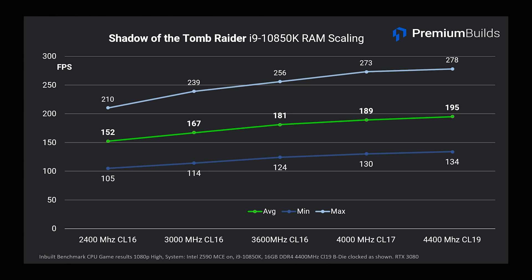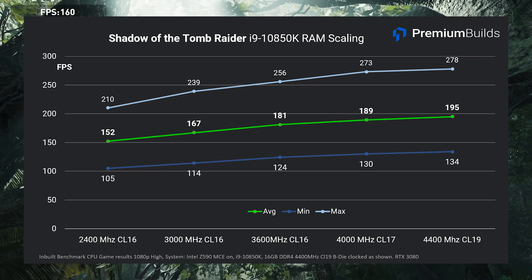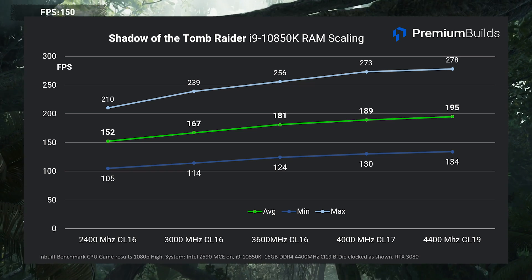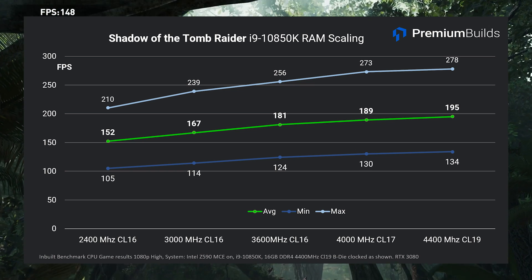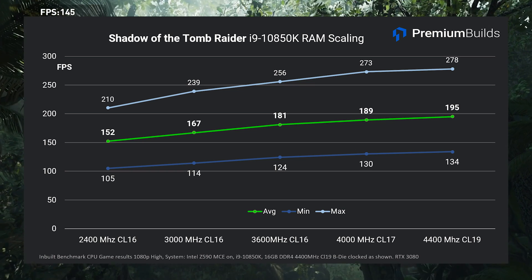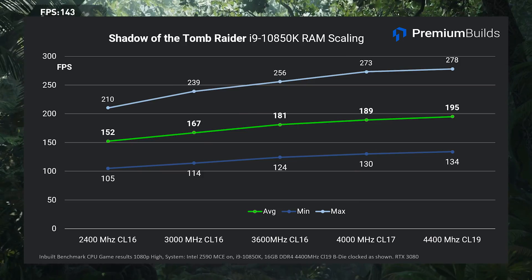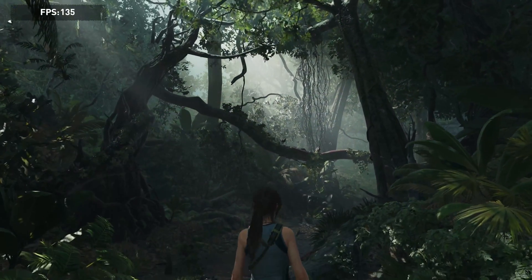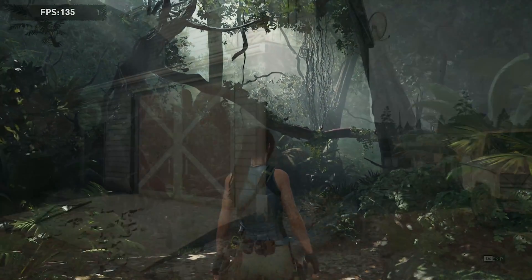To be clear, 2400MHz, or even worse 2133MHz, is what will happen by default if you fail to set XMP, or if the XMP profile on your RAM kit isn't stable. It can cost you a significant amount of performance.